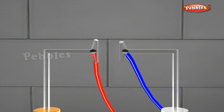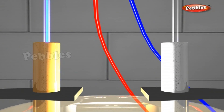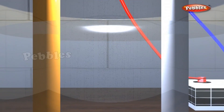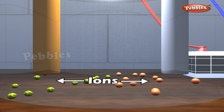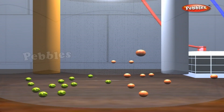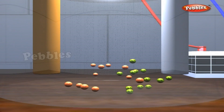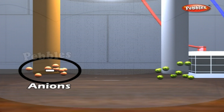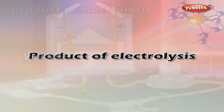Ions: When electricity is passed through an electrolyte in the fused state or in aqueous solution, the electrolyte gets split into two electrically charged parts called ions. An ion is an atom or group of atoms bearing either a positive or negative charge. The positively charged particles are called cations, and the negatively charged particles are called anions.